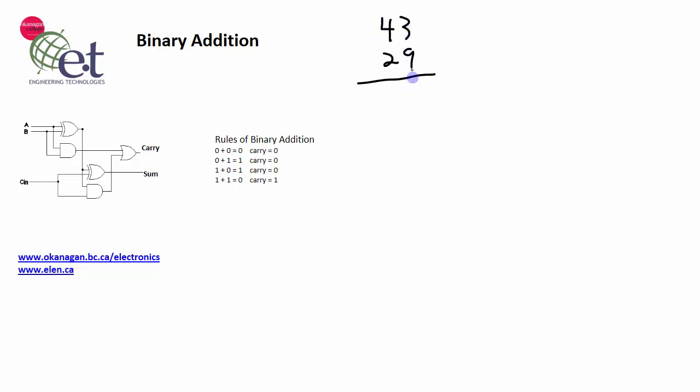So 3 plus 9 is 12. You can't represent 12 in a single column, so we put a 2 here for the ones column and we carry the tens part over into the tens column. And then for the tens column, we have 1 plus 4 plus 2, which adds up to 7, and we get the answer of 72.